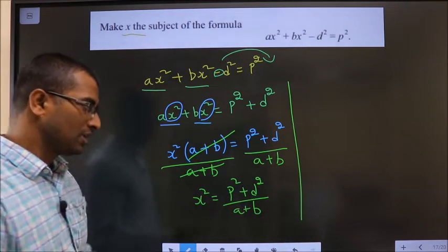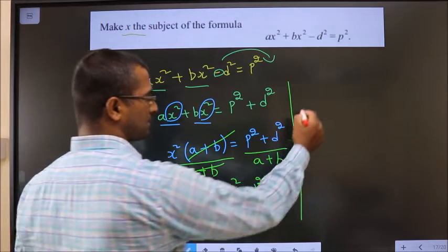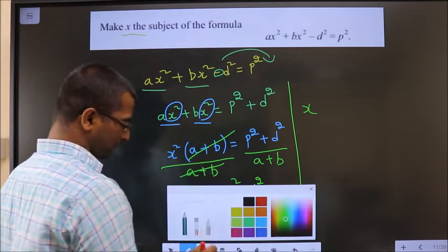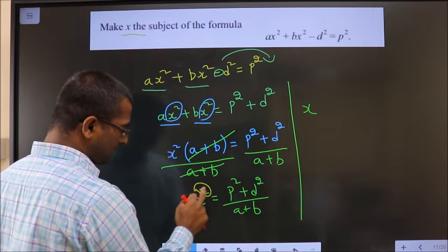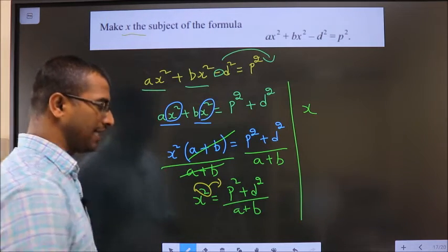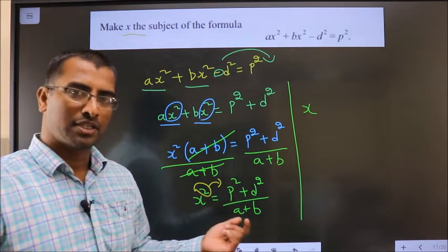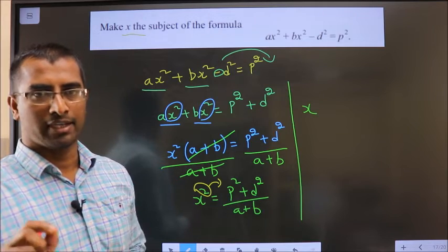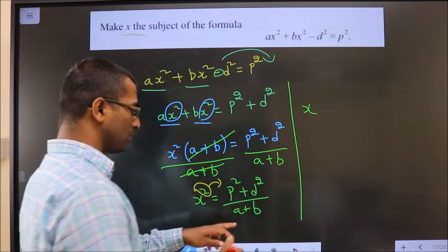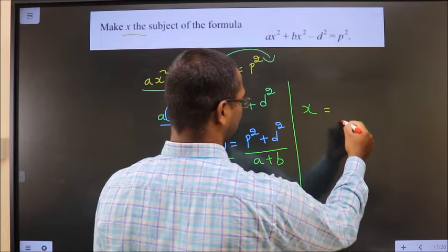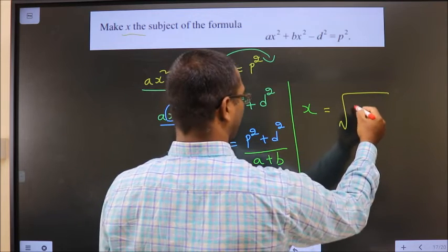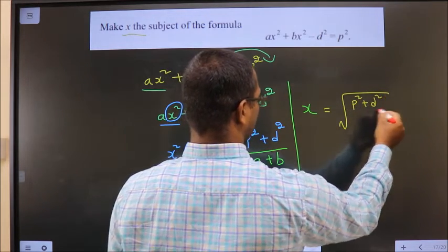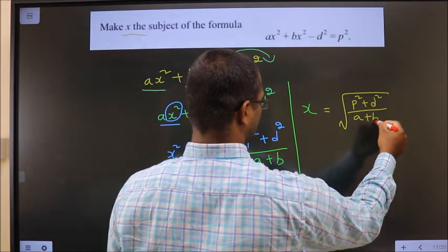Now, to make x the subject, this square needs to be shifted to the other side. Square you are shifting, it will become square root. So x equals square root of this entire thing, p square plus d square by a plus b.